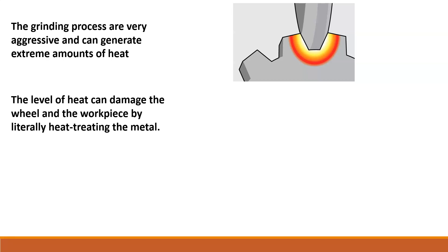The level of heat generated can literally damage the wheel. You can actually be going into a heat treat process. If you remember the first sections of the semester, we talked about the phase diagram — if you raise the temperature on metal it goes through different phases, some of which can change the quality of the material. During grinding, if you don't know how to control or look for these conditions, that is what this video is going to cover, as the last section of chapter 26.